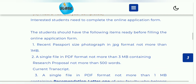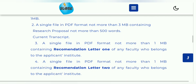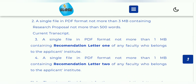Application form के लिए documents: First — passport size photograph, JPG format में 1MB size के अंदर। Second — PDF format में upload करना होगा: current transcript जो तुम्हारा result जितना तक है, उसके साथ 500 words का research write-up — उसका link description box में रहेगा, video देख लेना। और उसके साथ recommendation letter — दो professors से लेना पड़ेगा, लेकिन इस साल relaxation दिया है कि एक professor से भी ले सकते हो — department के head of department या कोई affiliated professor से — scan करके 1MB size के अंदर upload करना है।